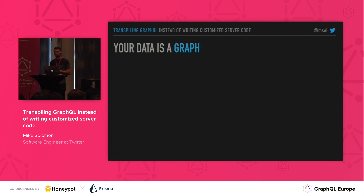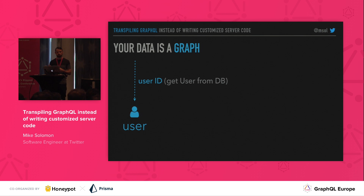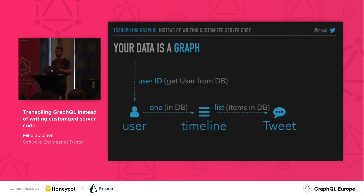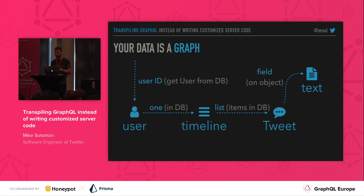Let's belabor this point with a diagram focused on where the data comes from. We start with a user ID and use that to get the user from the database. Once we have a user, we can look up that user's timeline, perhaps in a database — they'll have one timeline. Once we have that timeline, we can look up tweets, and there will be a whole bunch of tweets making up that timeline stored in a database somewhere. Now that we have a list of tweet objects, each one has fields, and one of those fields is text — that's the one we actually want to pull off.